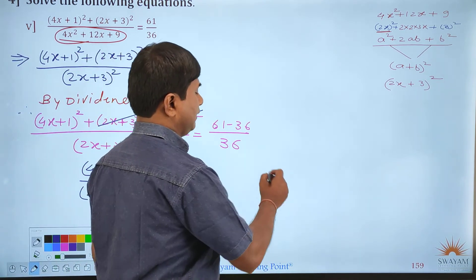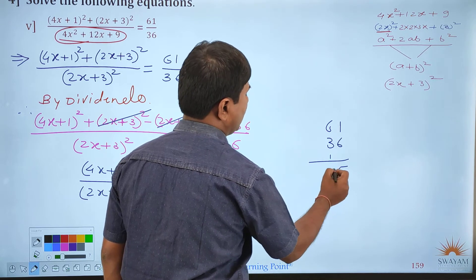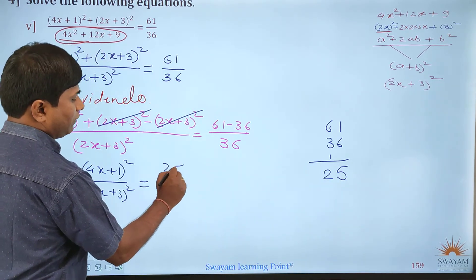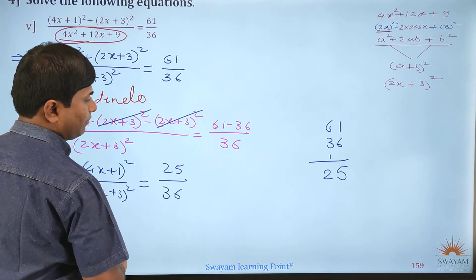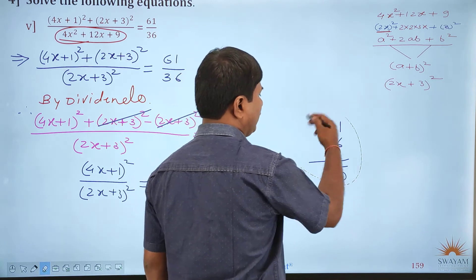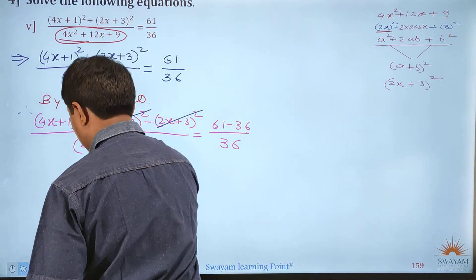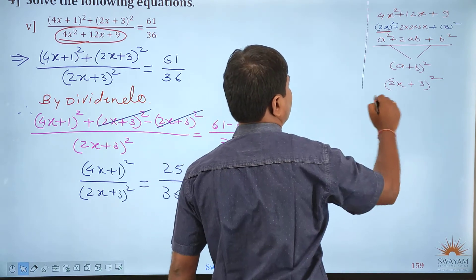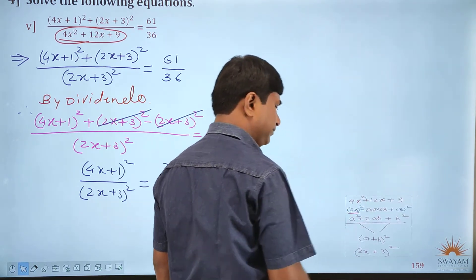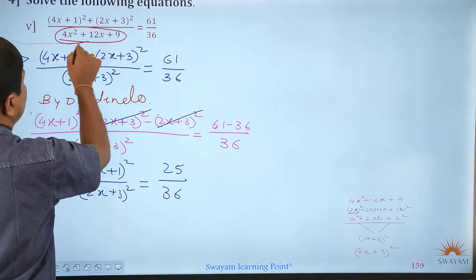Now 61 minus 36: 11 minus 6 is 5 so we get 25 in the numerator and 36 in the denominator. Now we take the square root. Normally in your textbook only the positive square root is taken, but I will show you both square roots because sometimes both are needed.